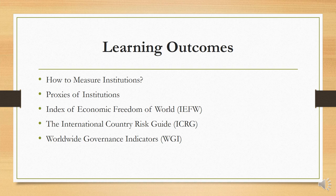In this lecture we will learn how to measure these institutions and the proxies of institutions. There are hundreds of institutional proxies, but we select three which are most frequently used in applied research: namely, the Index of Economic Freedom of the World, the International Country Risk Guide, and the Worldwide Governance Indicator.